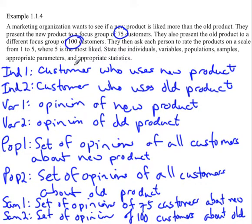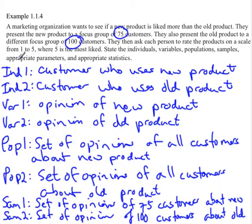The last thing to consider is the parameters and statistics. Since you're looking at opinions, most likely you would be looking at proportion — the proportion of people who rated the product a five, four, three, two, or one. You'd have a proportion for the population and a proportion for each sample. And that's it for coming up with populations and samples.